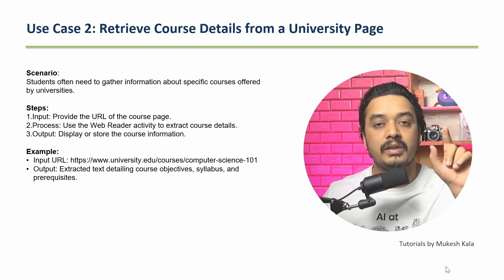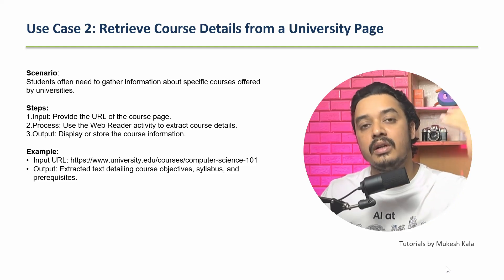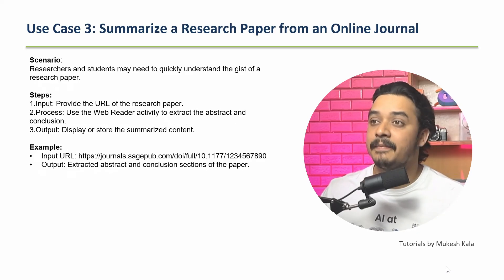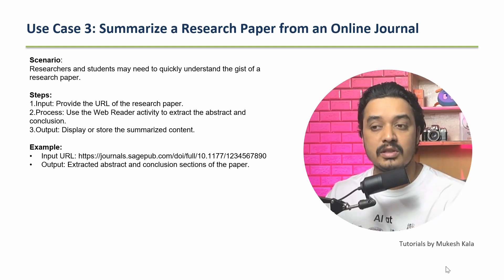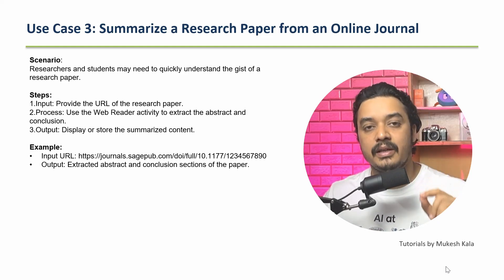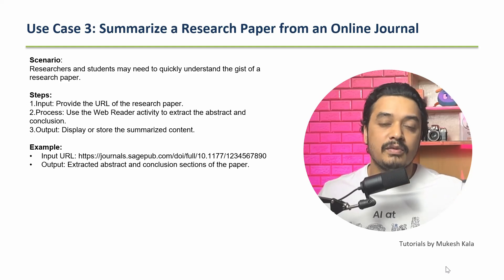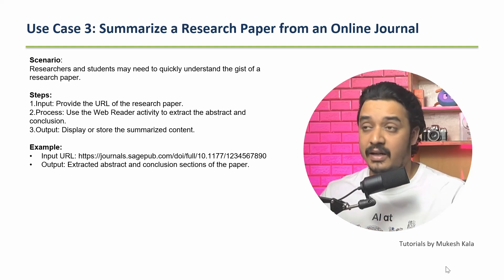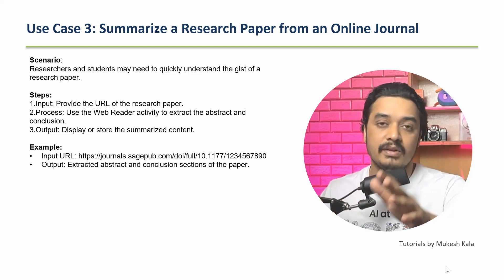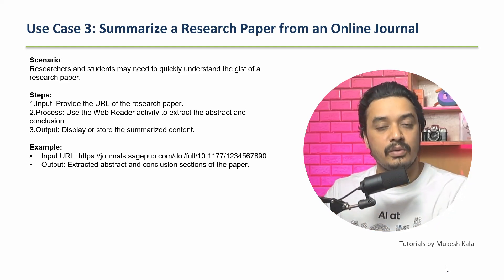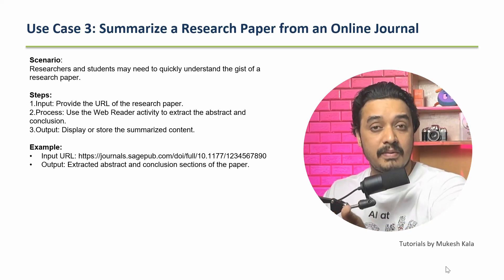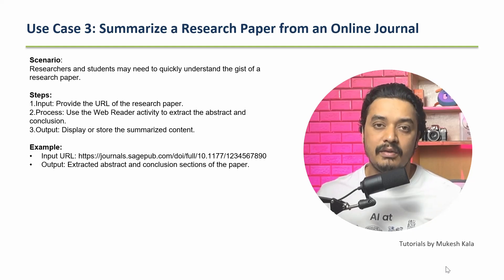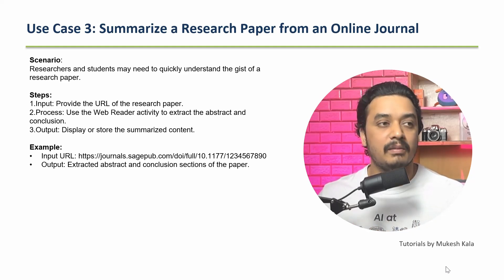The second use case: students often need to gather information about courses provided by a university. You can provide the courses landing page URL as input and write a one-liner prompt like 'give me the list of courses available in this content.' It can also be used to summarize a research paper from an online journal. If the journal is in a different language — French, German — you can convert it to English using the Generative AI detect language and translate activities in combination.